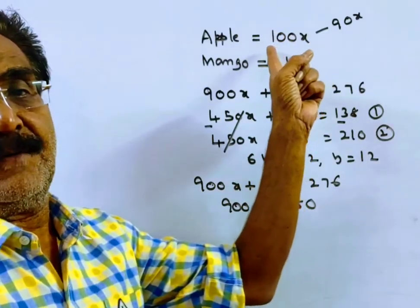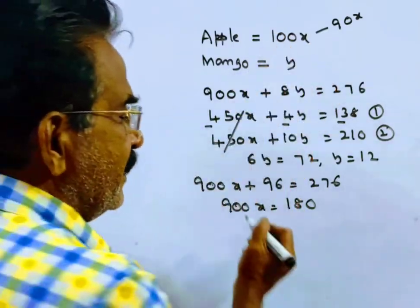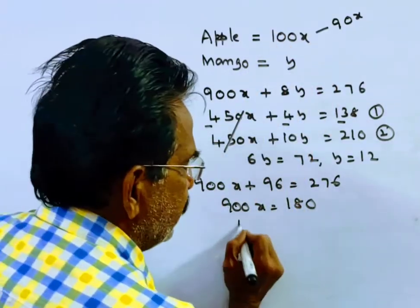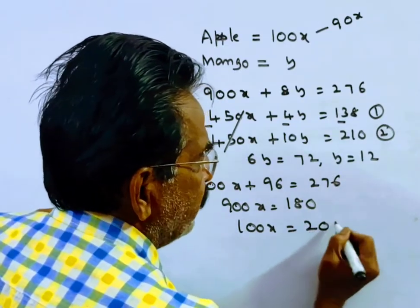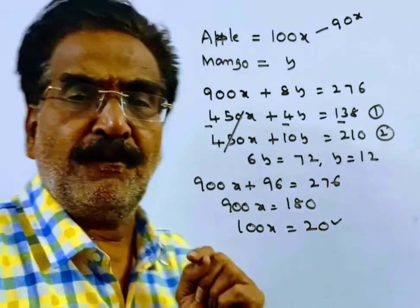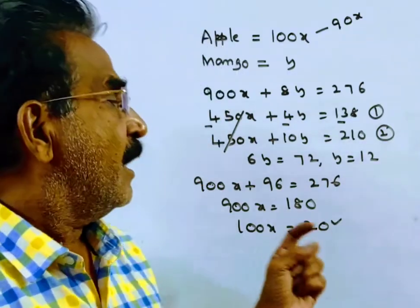We want the price of apple, which is 100x. 900x equals Rs. 180, so 100x equals Rs. 20. The price of each apple is Rs. 20 and each mango is Rs. 12.